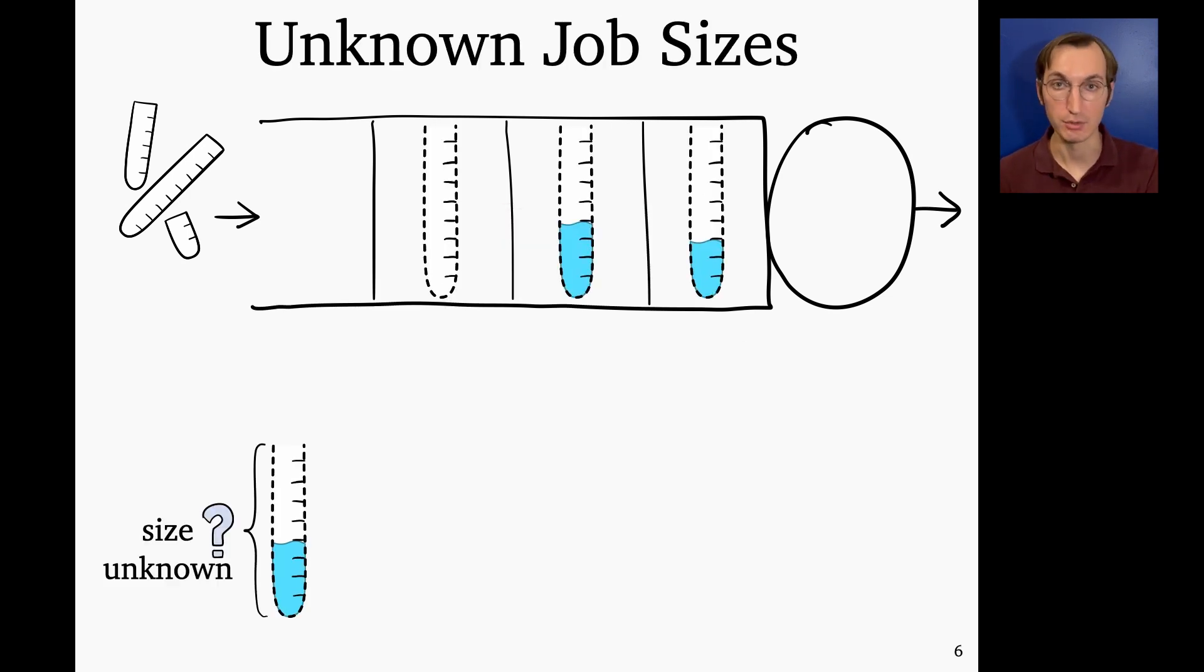Things get a lot hairier when we go to unknown job sizes, where we don't know the heights of the test tubes. So how do we schedule when we have unknown job sizes? So the first question we should ask is what information is even available to us when designing a scheduling policy? So one piece of information that's available is the age of each job. We can track how long we've served each job so far. That's easy to do. Another piece of information that's available is the overall distribution of job sizes. Even if we don't know any individual job size that's in our system right now, it's reasonable to assume that based on historical data, we know the overall distribution of job sizes. And so the name of the game when scheduling with unknown job sizes is leveraging each job's age and the size distribution S in order to design an optimal policy.